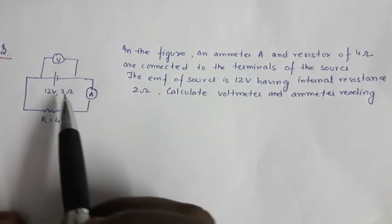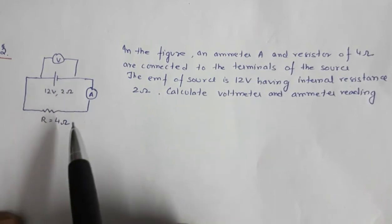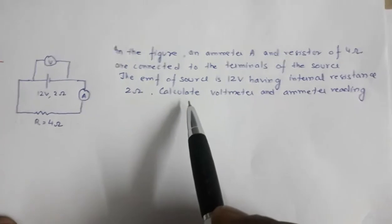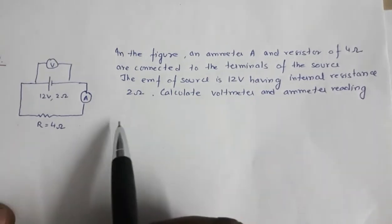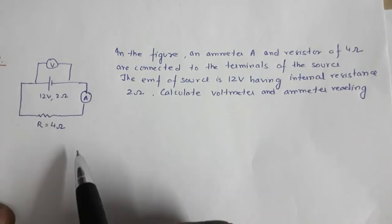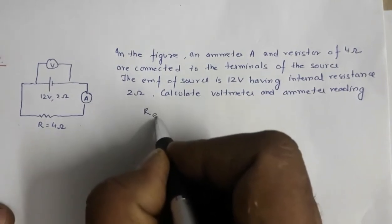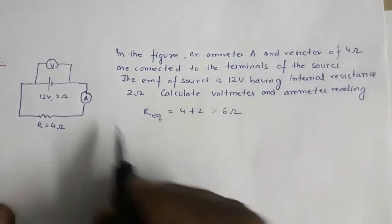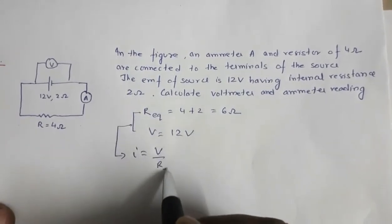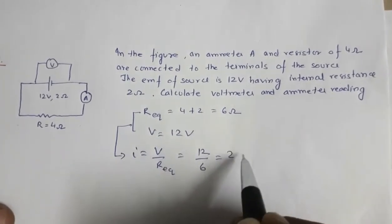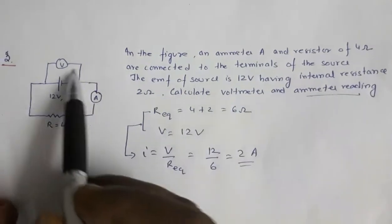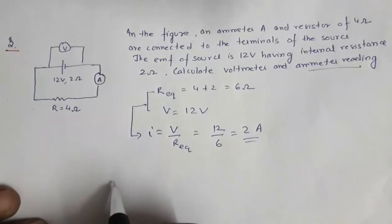Another 2017 numerical: a 12 volt cell of internal resistance 2 ohm is given. Across it, a resistance R = 4 ohm is connected, along with an ammeter and voltmeter. We need to calculate the ammeter and voltmeter readings. The 2 ohm and 4 ohm are in series, so total resistance = 4 + 2 = 6 ohm. With V = 12 volt, current I = V/R_eq = 12/6 = 2 ampere. So the ammeter reading is 2 ampere.